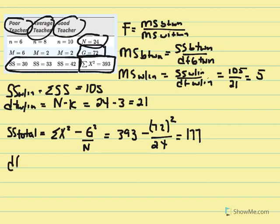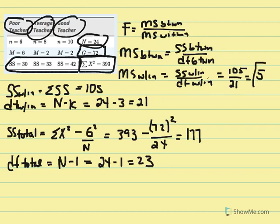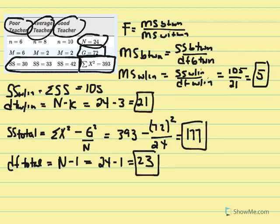Now we can calculate DF total, which equals N minus 1: 24 minus 1 equals 23. This leads us into a process of elimination — once we have two values, we can solve for the missing variable. I'll put all these calculated values into a source table as we've done in previous videos, and use them to calculate the missing values.